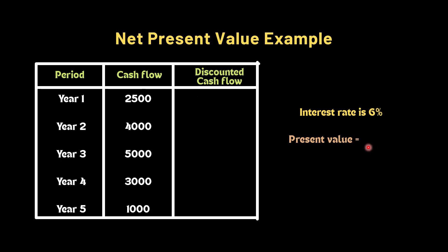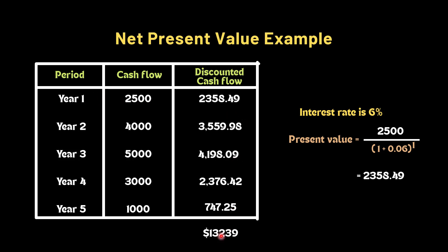We will take 2,500 and divide that by 1 plus 0.06 to the power 1. We used power 1 as we are discounting the value of year 1. We will do the same for other periods too and we will get the present value of each period. If we add them we will get $13,239.